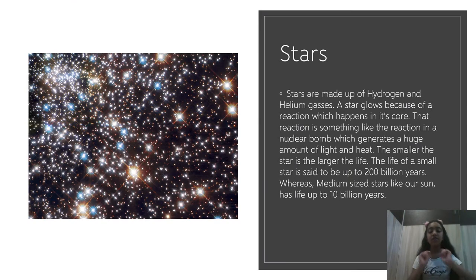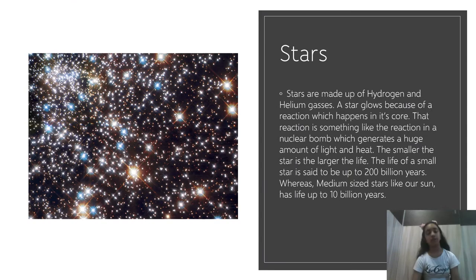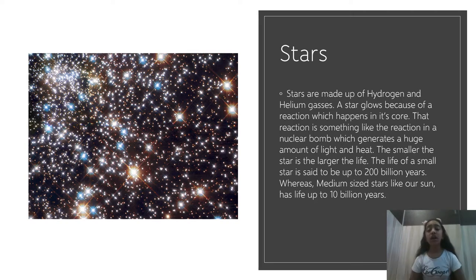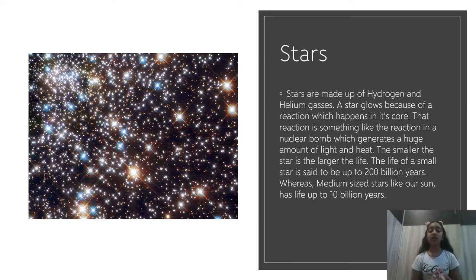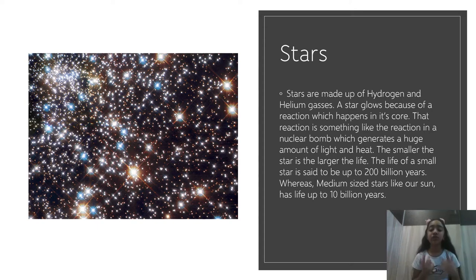The first heavenly body we will be discussing about is stars. Stars are made up of hydrogen and helium gases. A star glows because of a reaction which happens in its core — that reaction is something like the reaction which takes place in a nuclear bomb. This reaction generates a huge amount of light and heat.